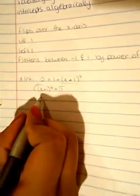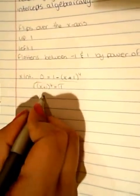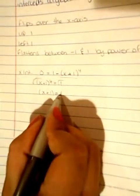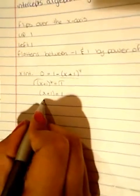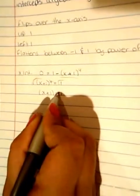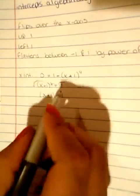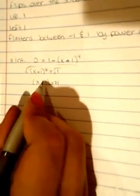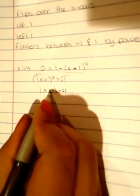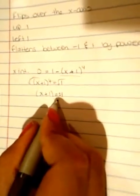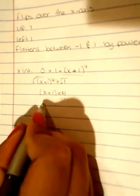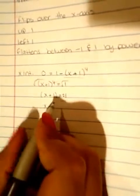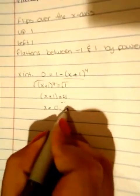So it's going to be x+1 = ±1. And then we're going to move the 1 over. This is going to be plus or minus 1 because it's the root of 1. And then we're going to have 2 x-intercepts.